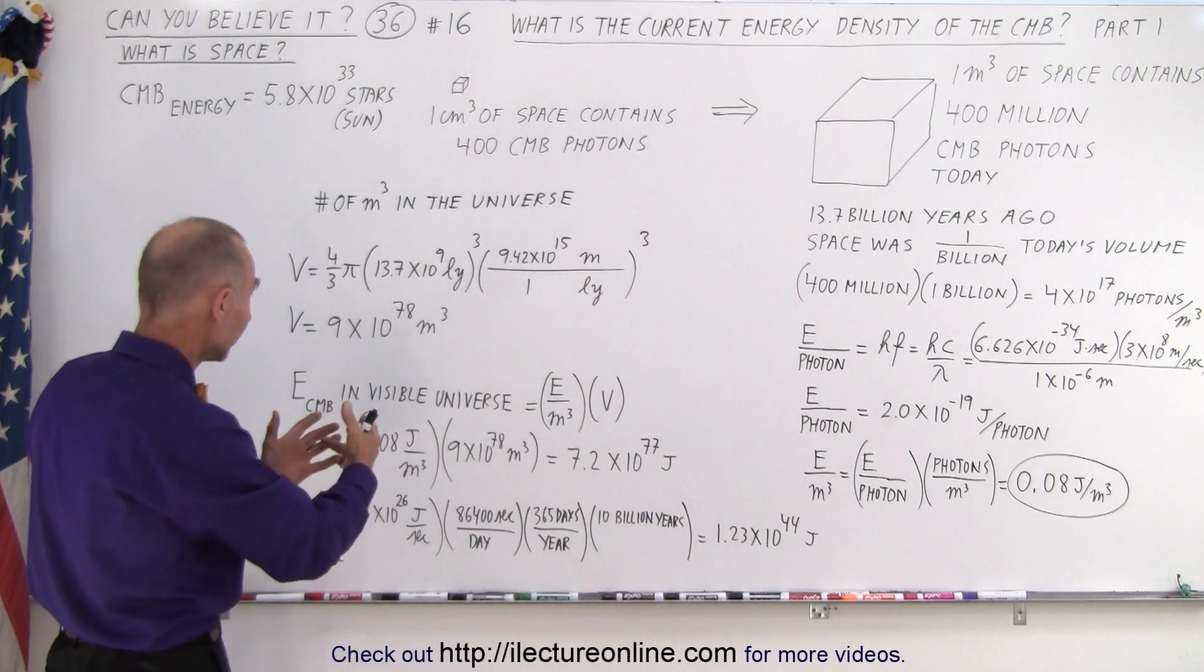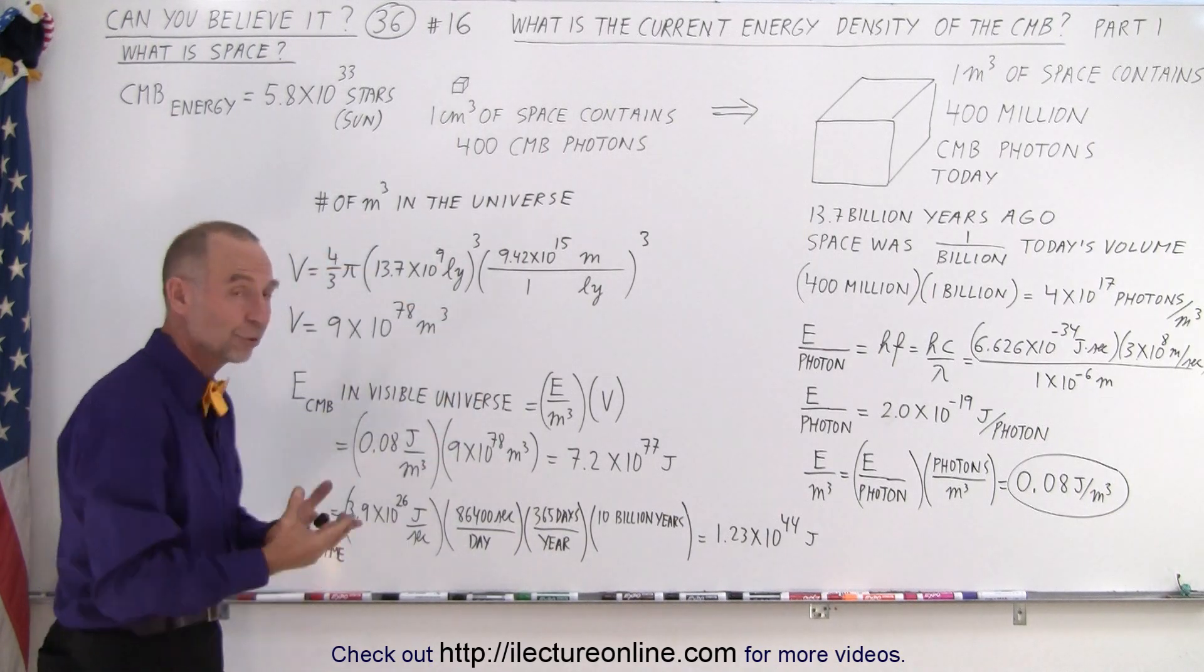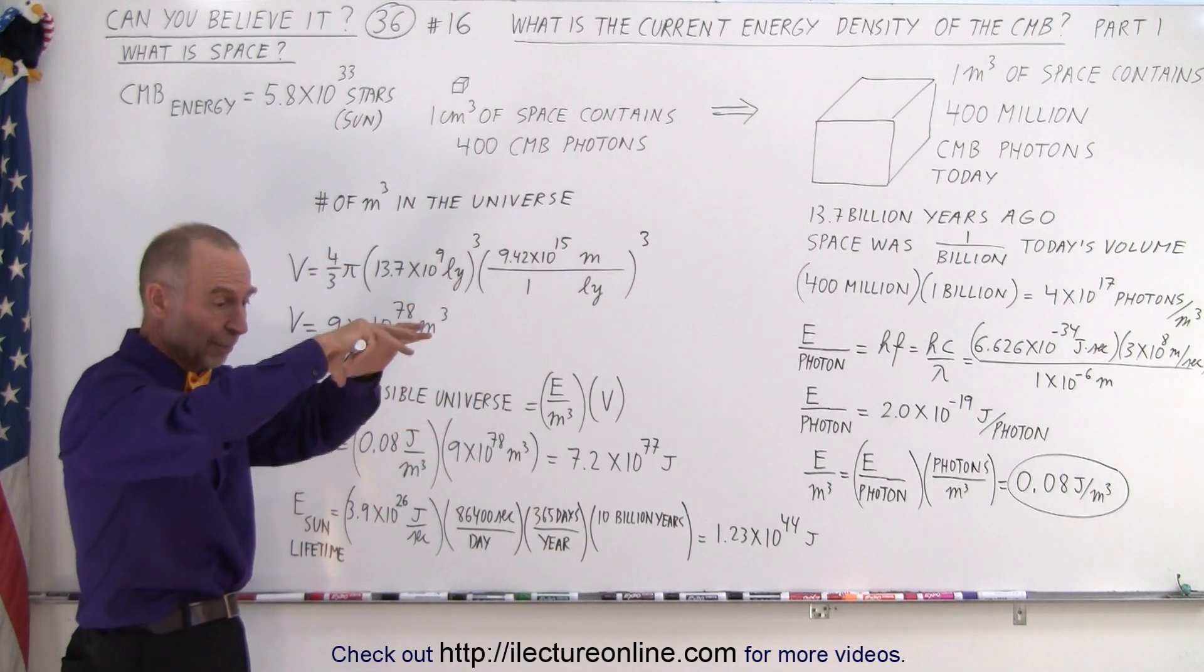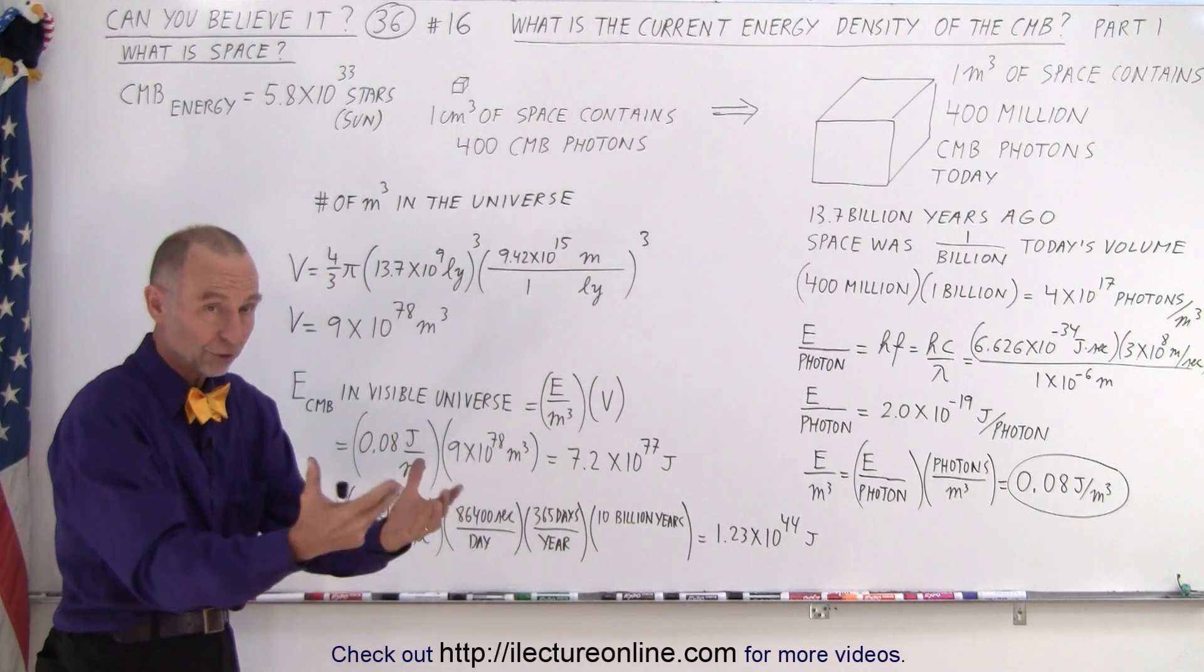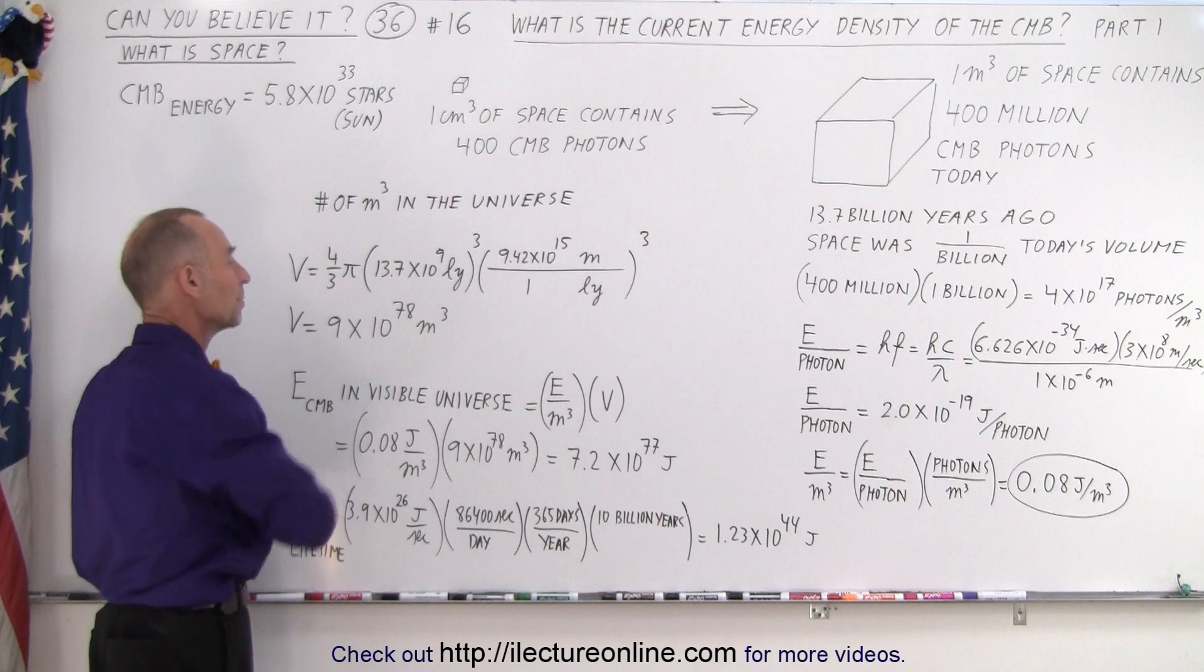We have to cube that so we can convert. That means, currently, in the visible universe, in the observable universe, which was, back then, filled with a lot more CMB photons, was equal to 9 times 10 to the 78 cubic meters.